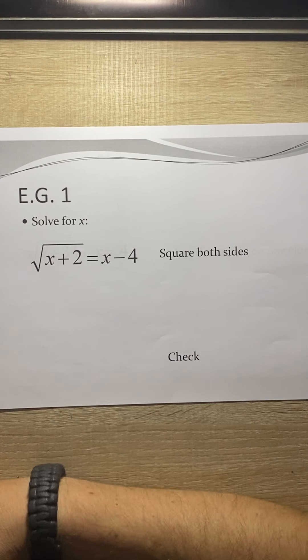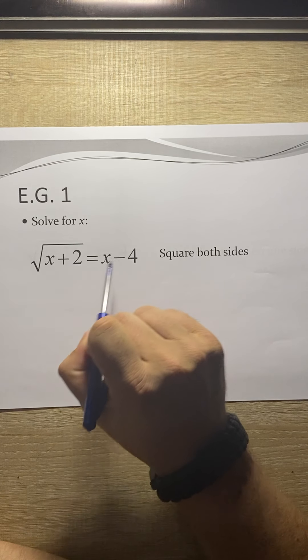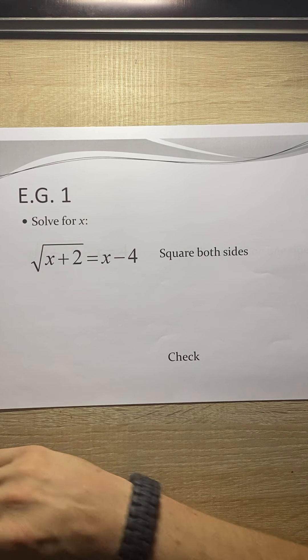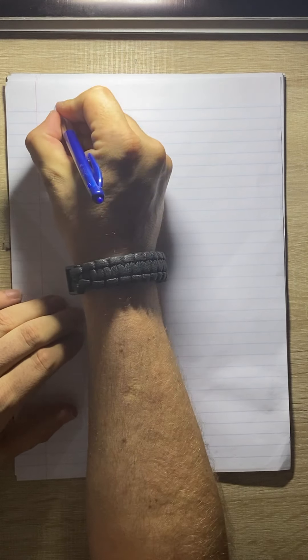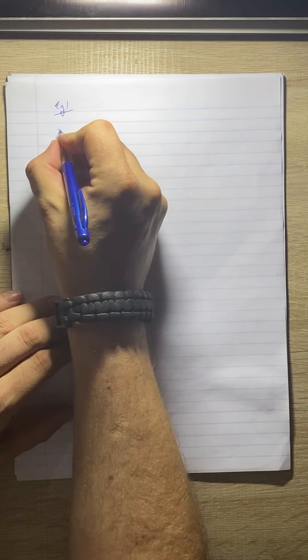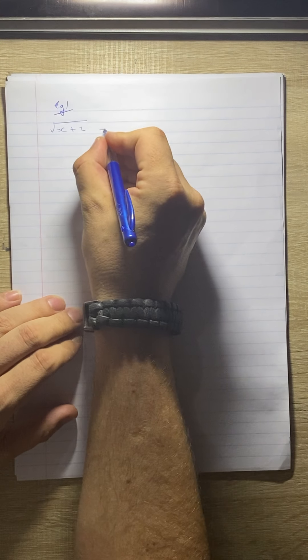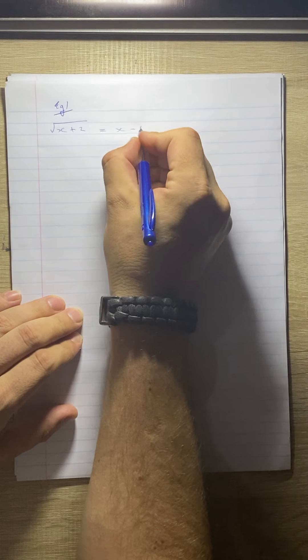Example 1: Solve for x. We've got the square root of x plus 2 equals x minus 4. I'm going to move this and we can do it on a piece of paper together. So example 1: we've got the square root of x plus 2 equals x minus 4.